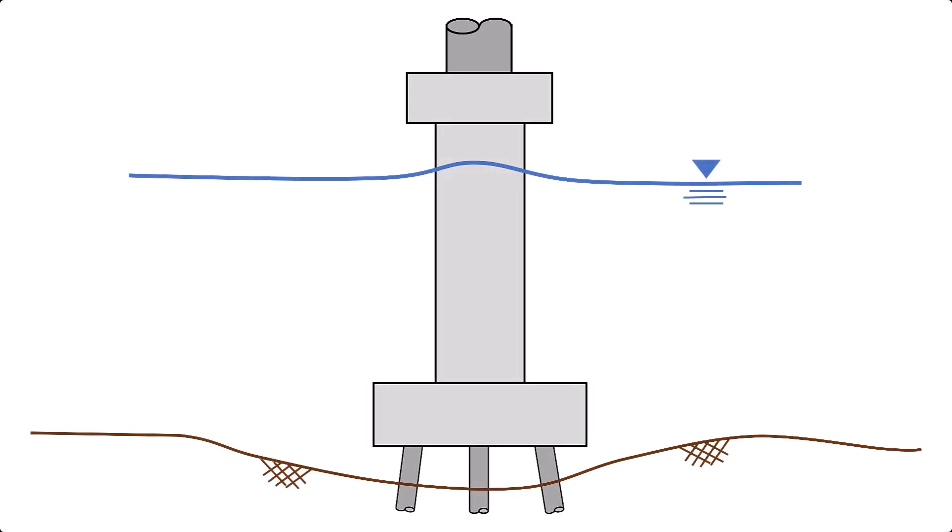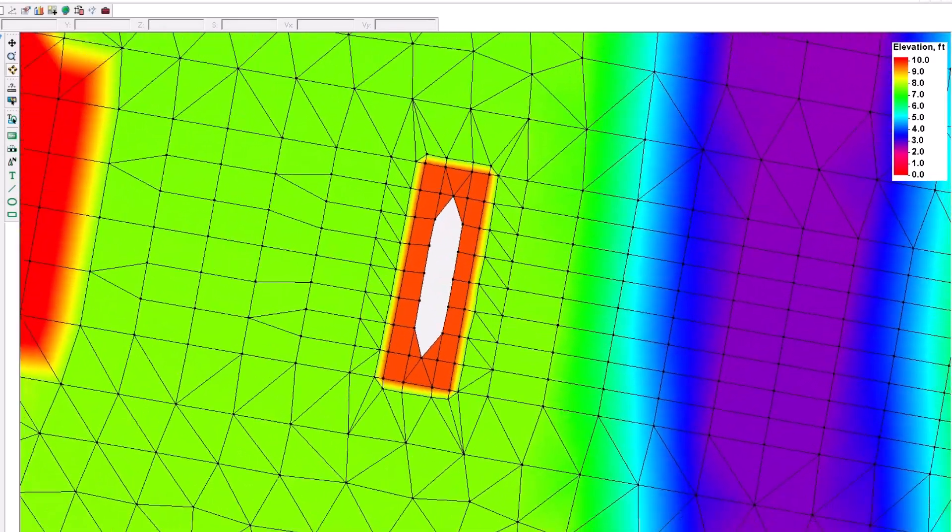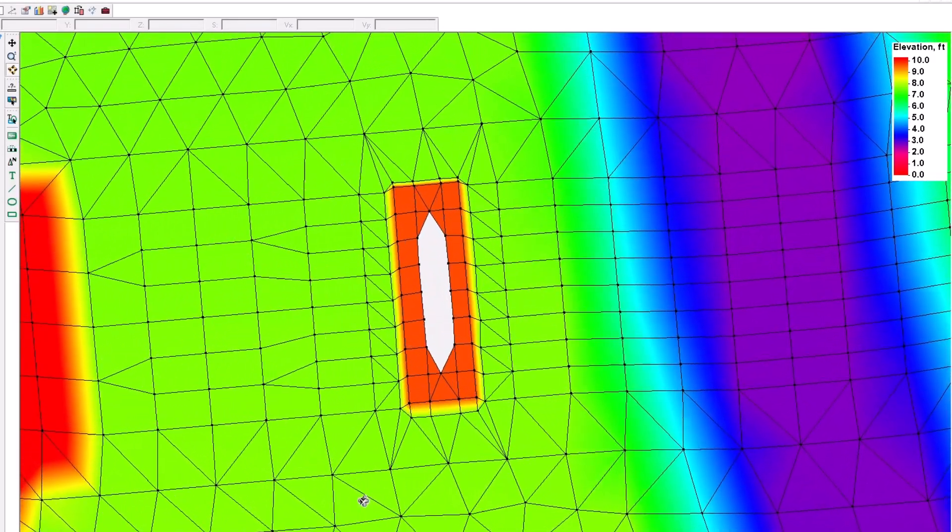There are several different approaches to modeling a complex pier. For piers with large exposed footings or pile caps, the footing may be represented within the mesh terrain. This reduces the number of modeling assumptions that need to be made for the pier.